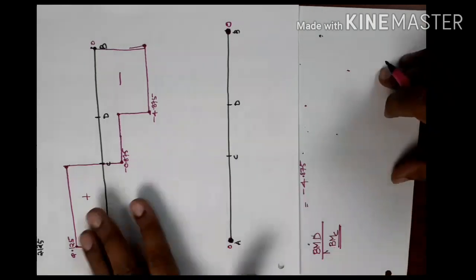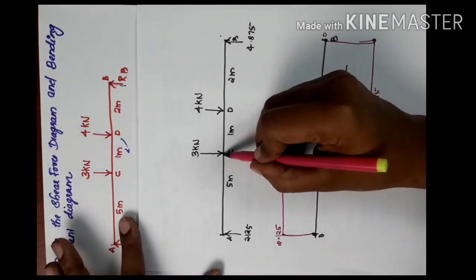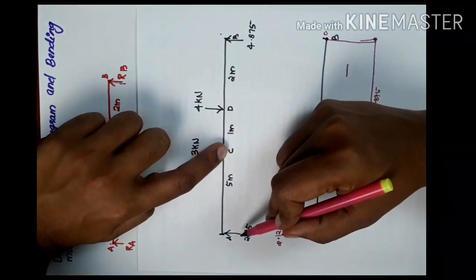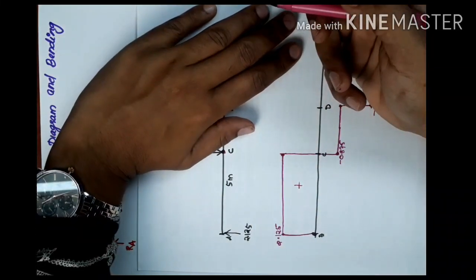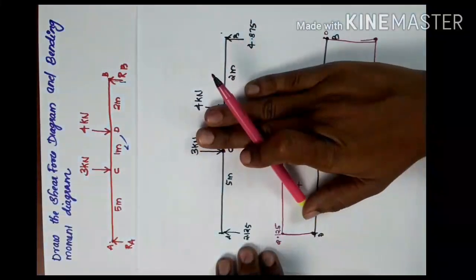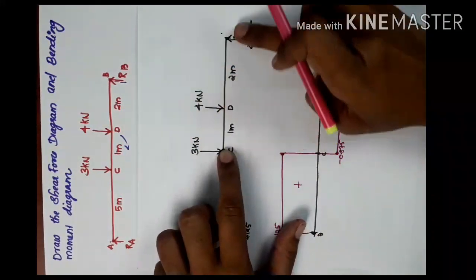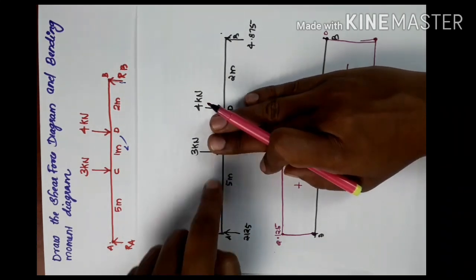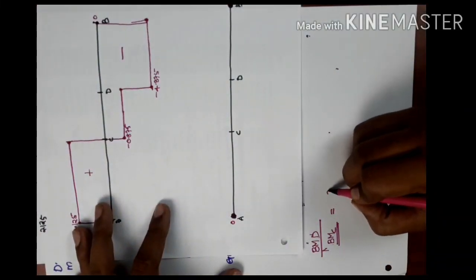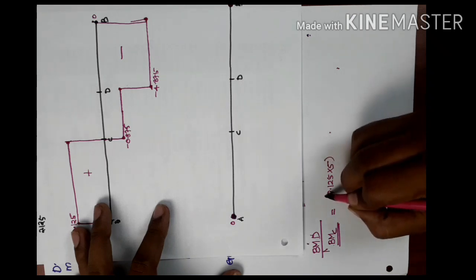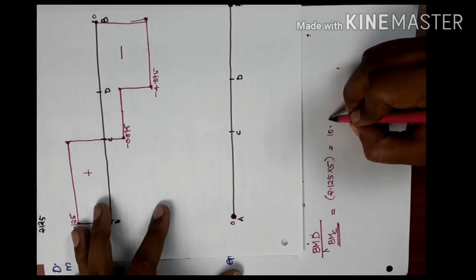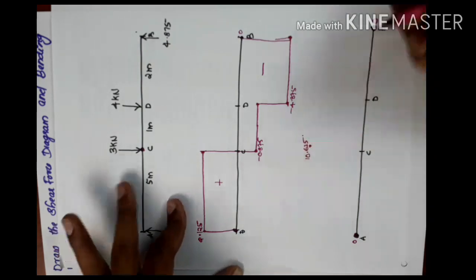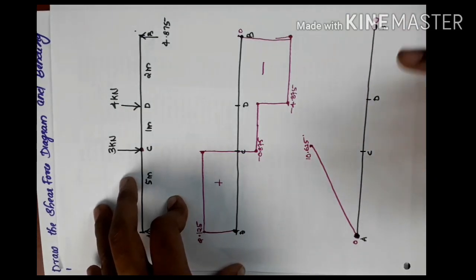Let's take the bending moment at C. At point C, we can take either the left or the right side. We take the left side. From the left, RA equals 2.125 and the distance from A to C is 5 metres. So the bending moment at C equals 2.125 into 5, which is 10.625. I mark this value — 10.625 — and there is a straight line from A to C since it is a point load, not a UDL.